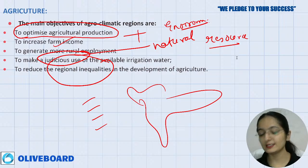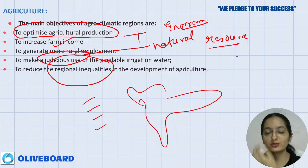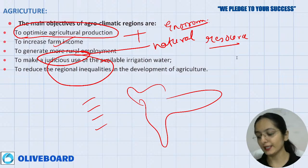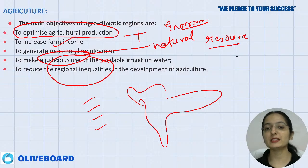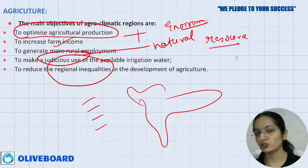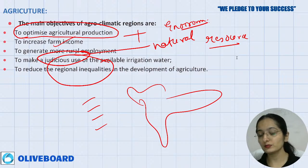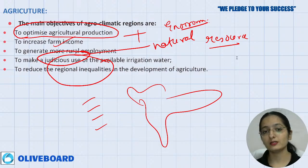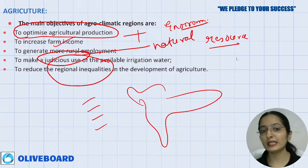Chota Nagpur Plateau is in Zone 7, not Zone 4. Zone 5 — Upper Gangetic Plains — is the zone with intensive agriculture.